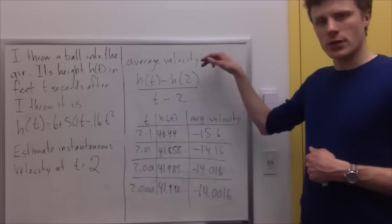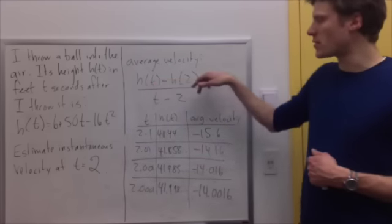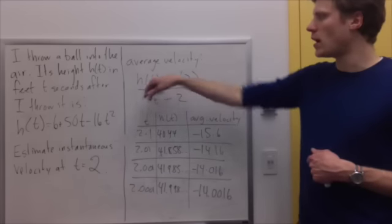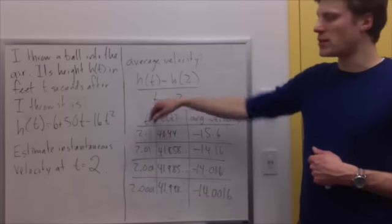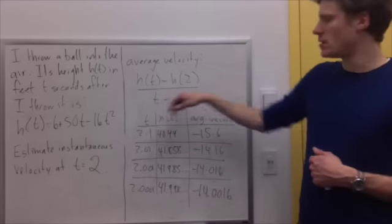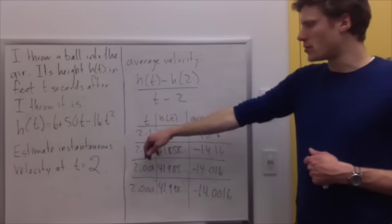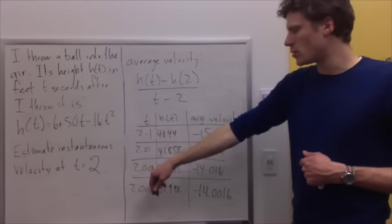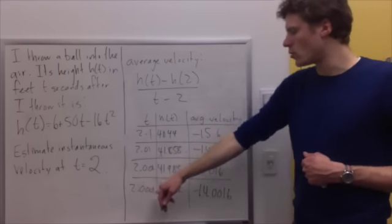Now, the average velocities that I'm computing here are h(t) - h(2), the change in height over the change in time from time t to time 2. So the values of t I've taken are 2.1, 2.01, 2.001, 2.0001. Here are the corresponding height values.